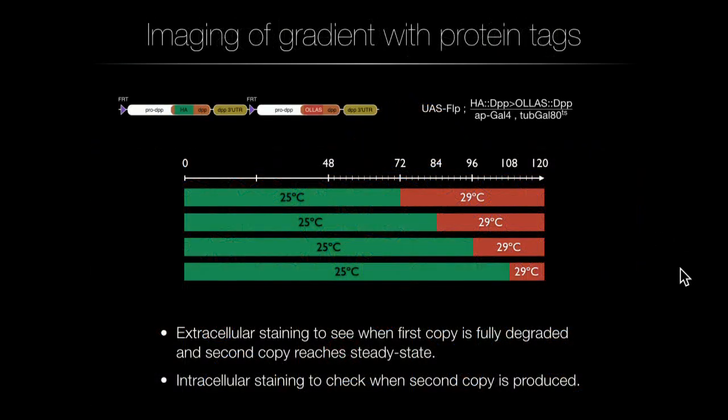With this tandem system, I combined it with Gal4/UAS to activate Flp, using the Apterous driver to express Flp only in the dorsal compartment of the wing disk. In this way, the ventral compartment serves as a control where the first protein is always produced and never the second, while the dorsal compartment is used to see how the protein is secreted and the gradient is created. The idea was to analyze how long the gradient takes to form and how fast the process is.